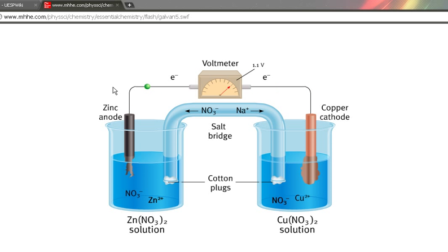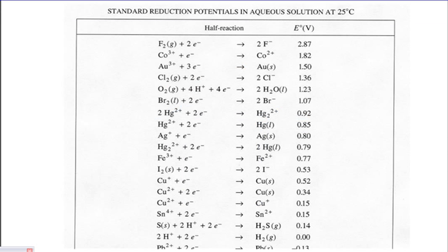Now, all of the values of the potential reductions that can happen in typical galvanic cells are given to you on your AP givens, or on your table, the one that looks like this. It says, standard reduction potentials in aqueous solution at 25 degrees Celsius.